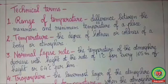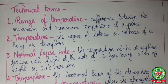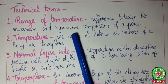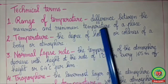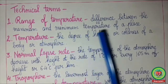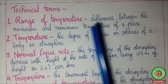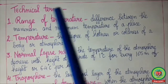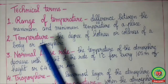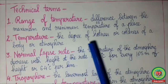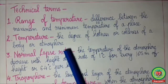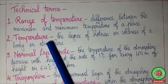Let us see the technical terms for the day. The first term is range of temperature: the difference between the maximum and minimum temperature of a place is called range of temperature. The second term is temperature: the degree of hotness or coldness of a body or atmosphere is called temperature.